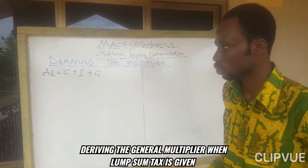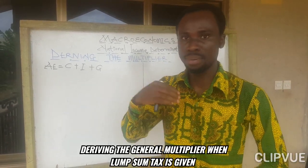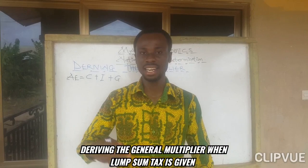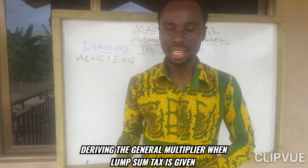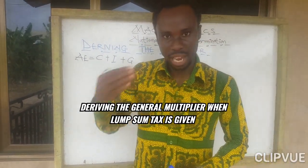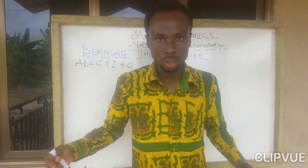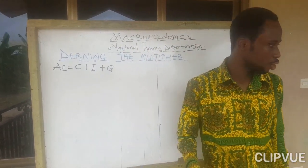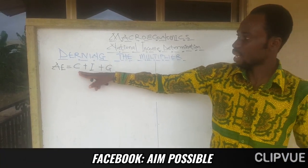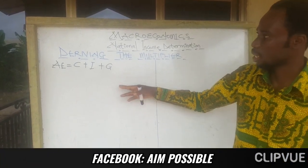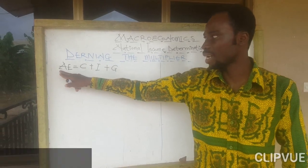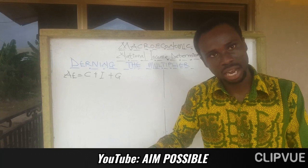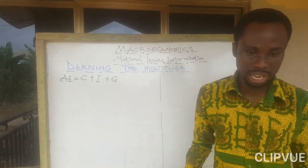From our previous lecture we understood that the multiplier is basically used to measure the change that occurs in the equilibrium national income as a result of a change in any of the autonomous components. We have understood that when any one of those autonomous components changes, the aggregate expenditure or the equilibrium national income is going to change.